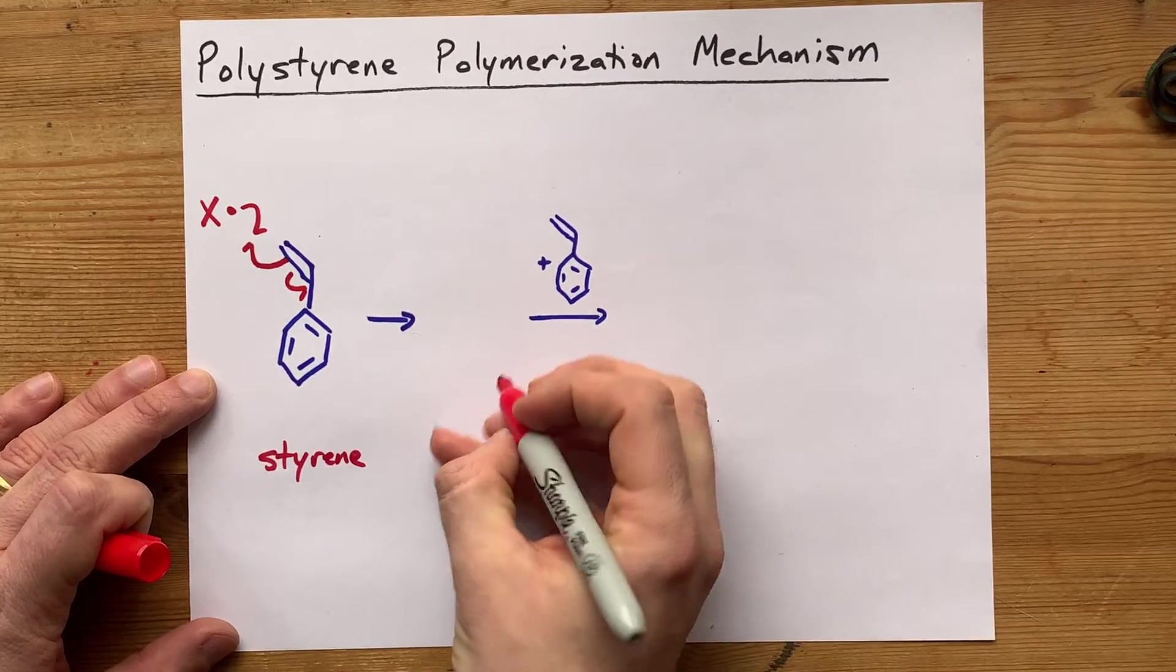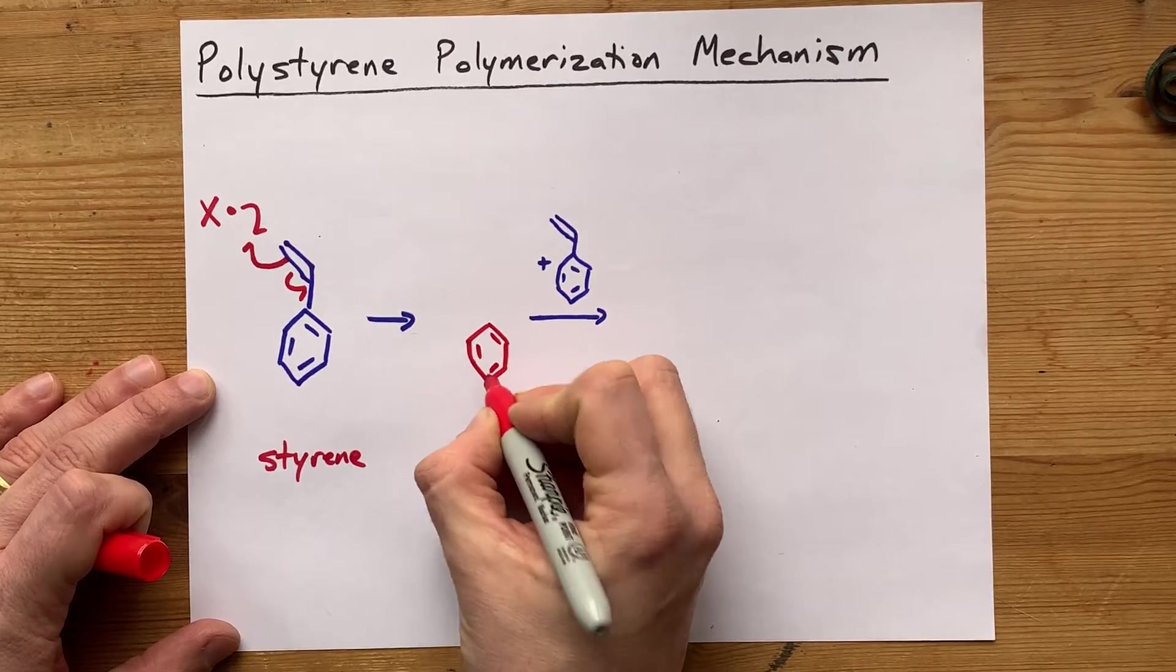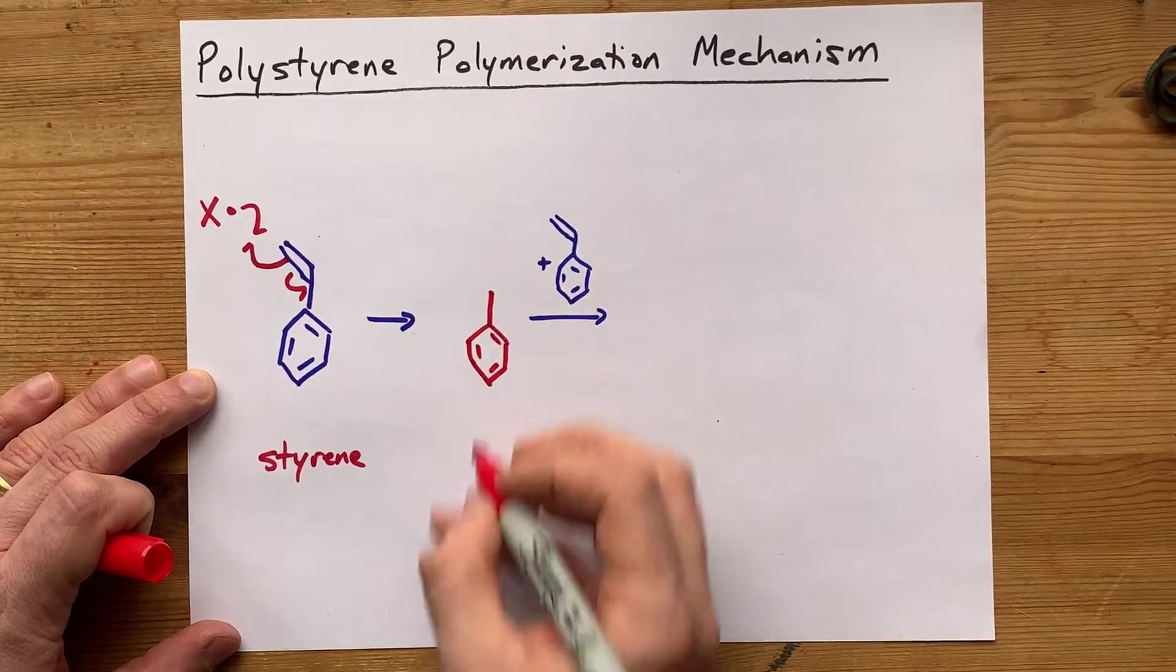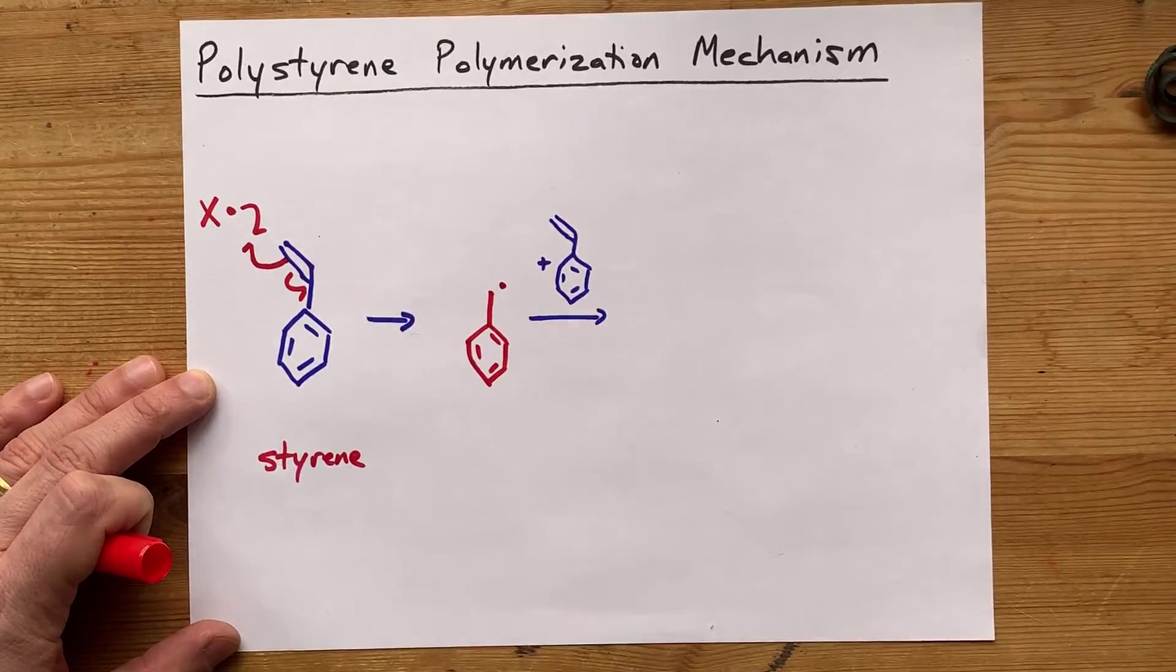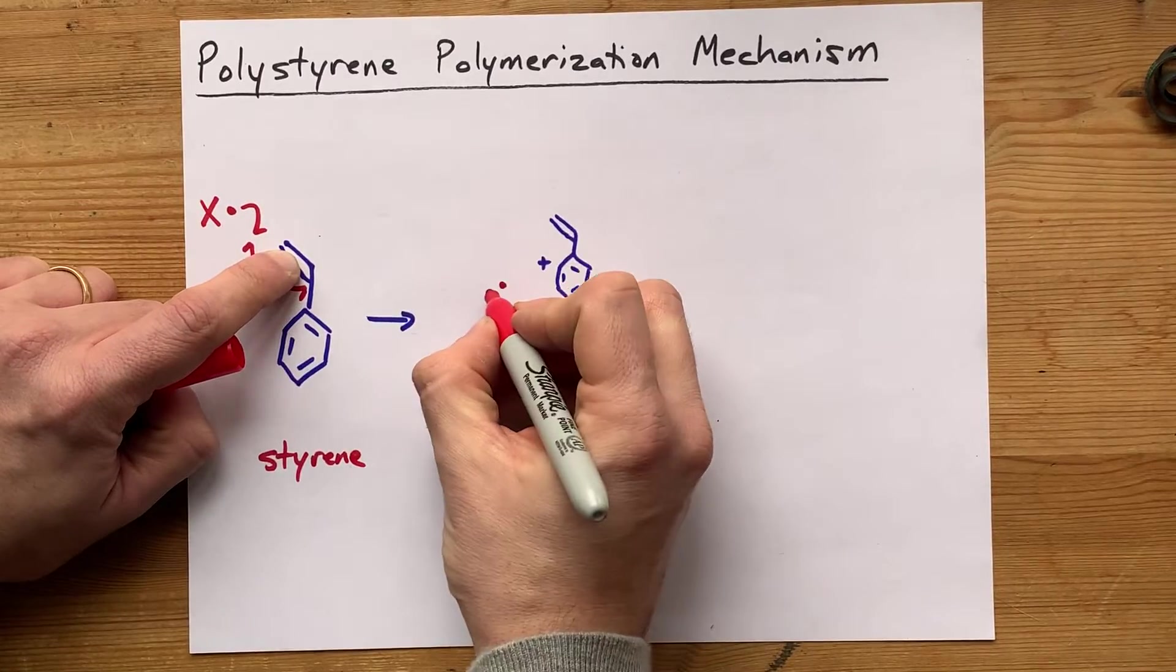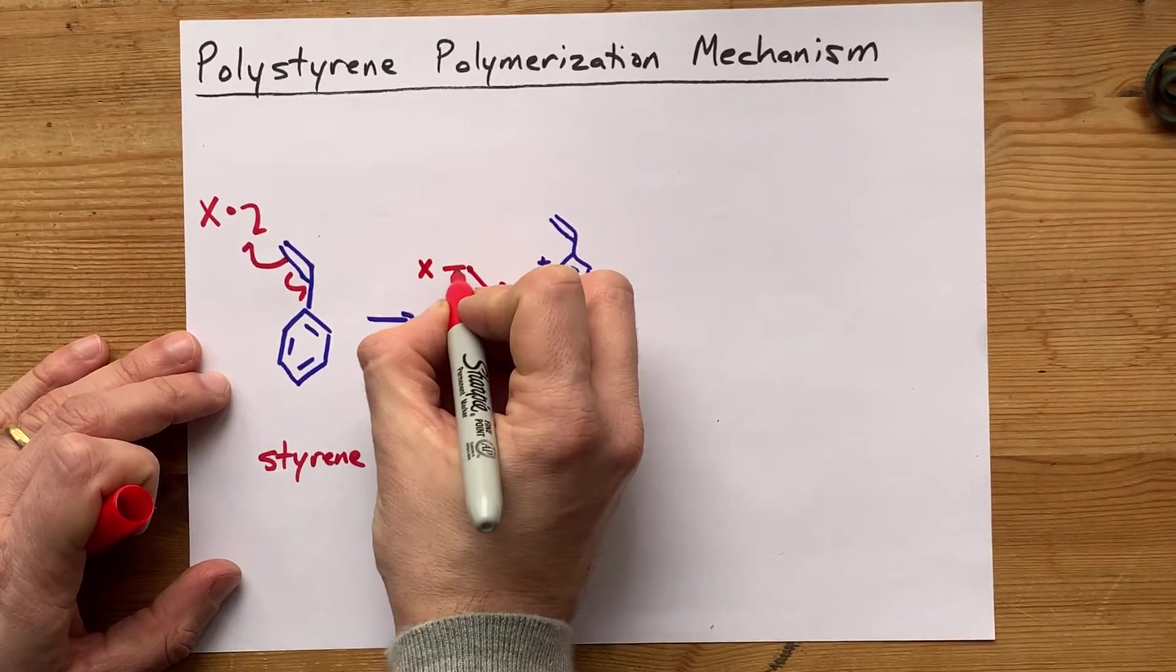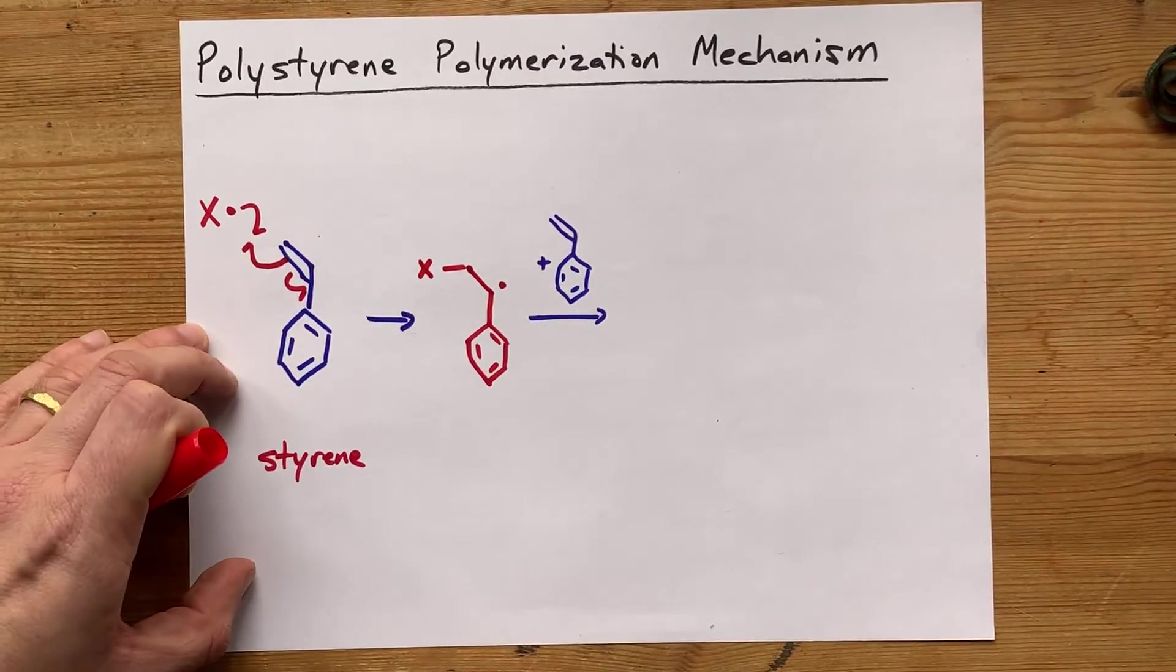What we've ended up with then is we still have our benzene. It was unaffected by the reaction, and we're still connected to that carbon. Although it does have a free radical on it, we're still singly connected to this carbon here. But that carbon is now connected to whatever our initiator was.